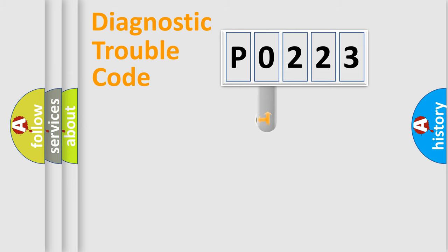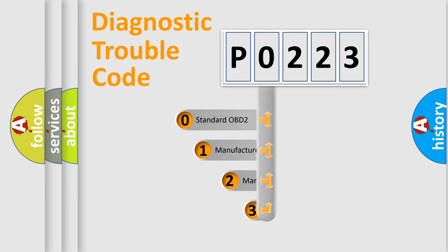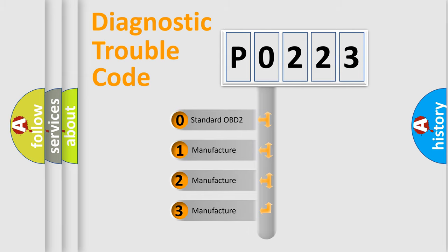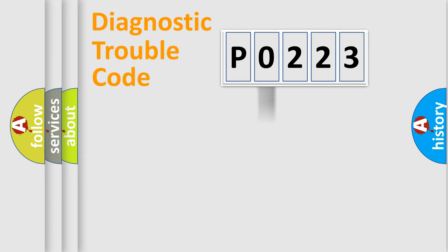This distribution is defined in the first character code. If the second character is expressed as 0, it is a standardized error. In the case of numbers 1, 2, or 3, it is a car-specific error expression.